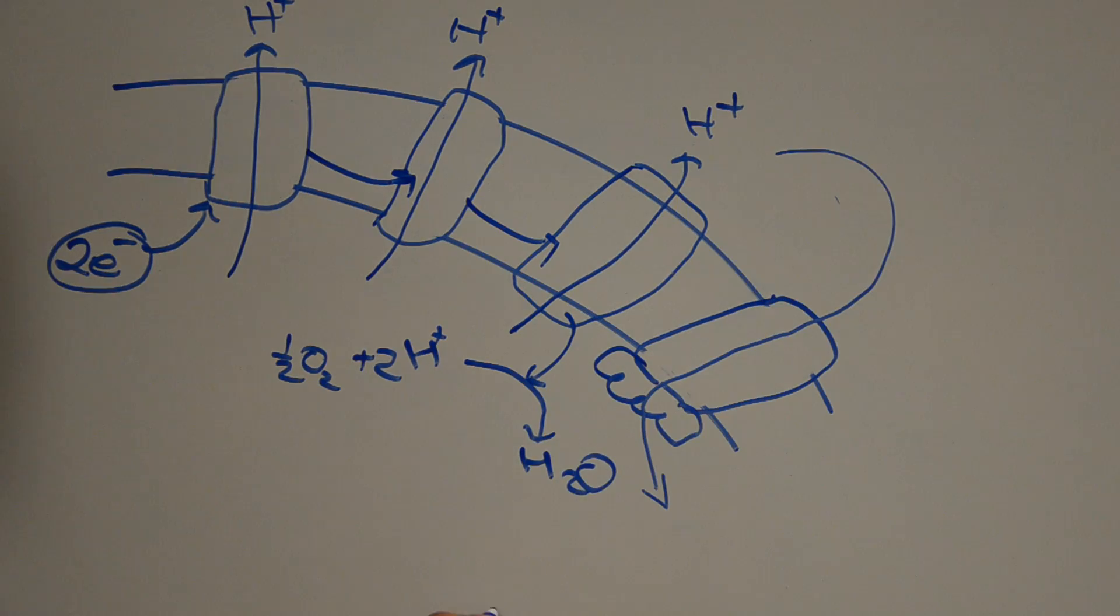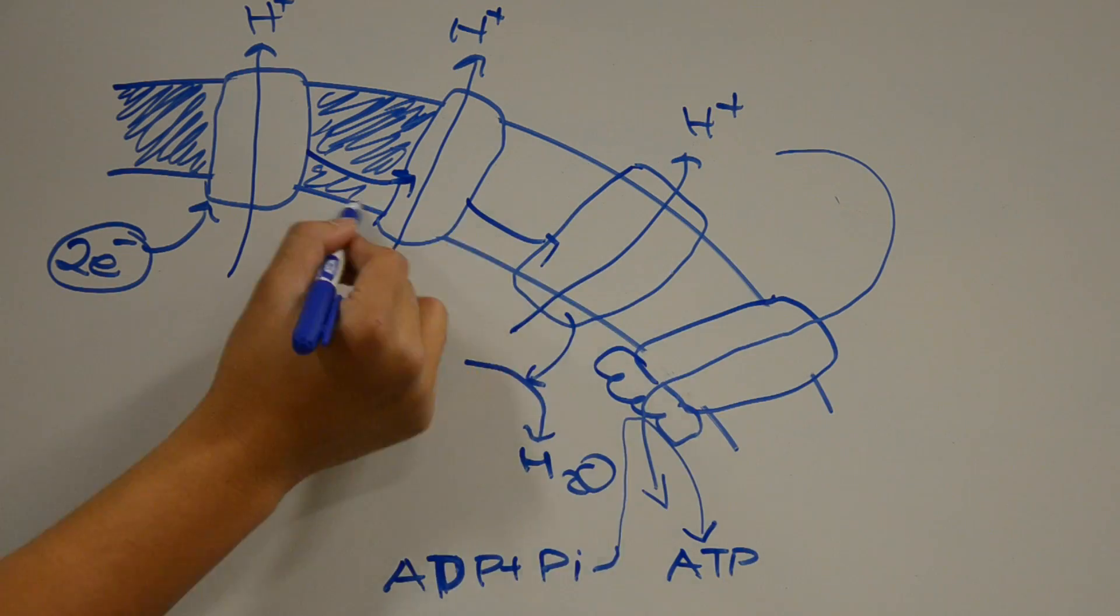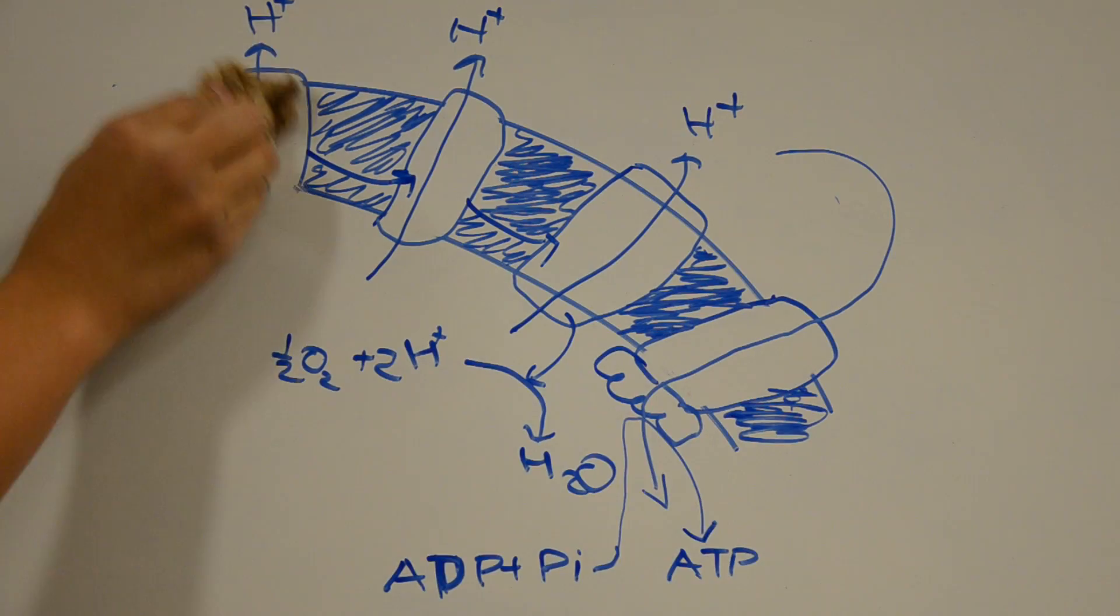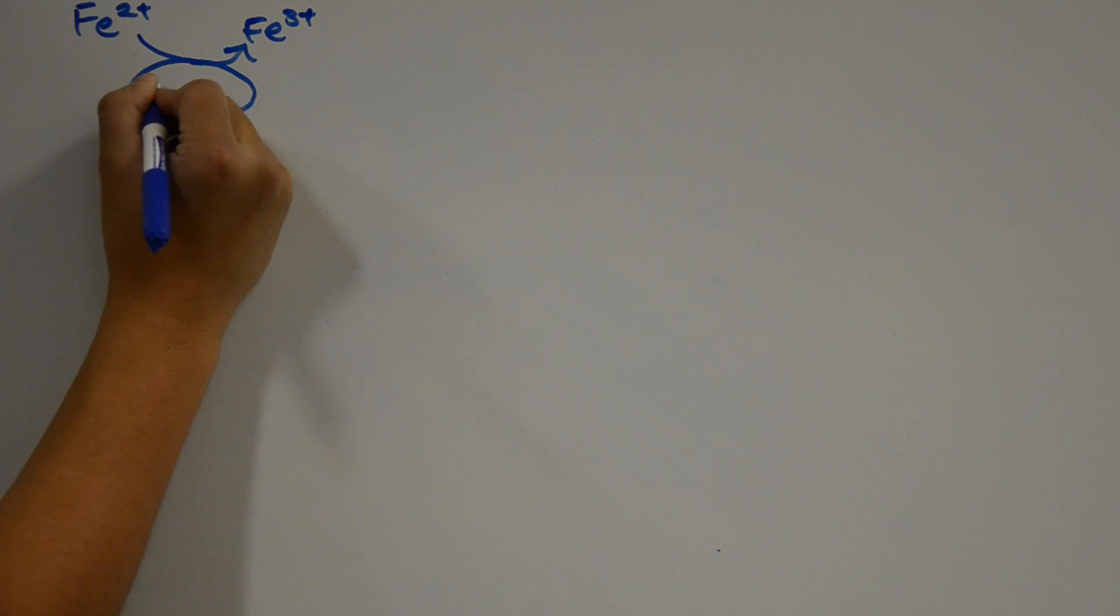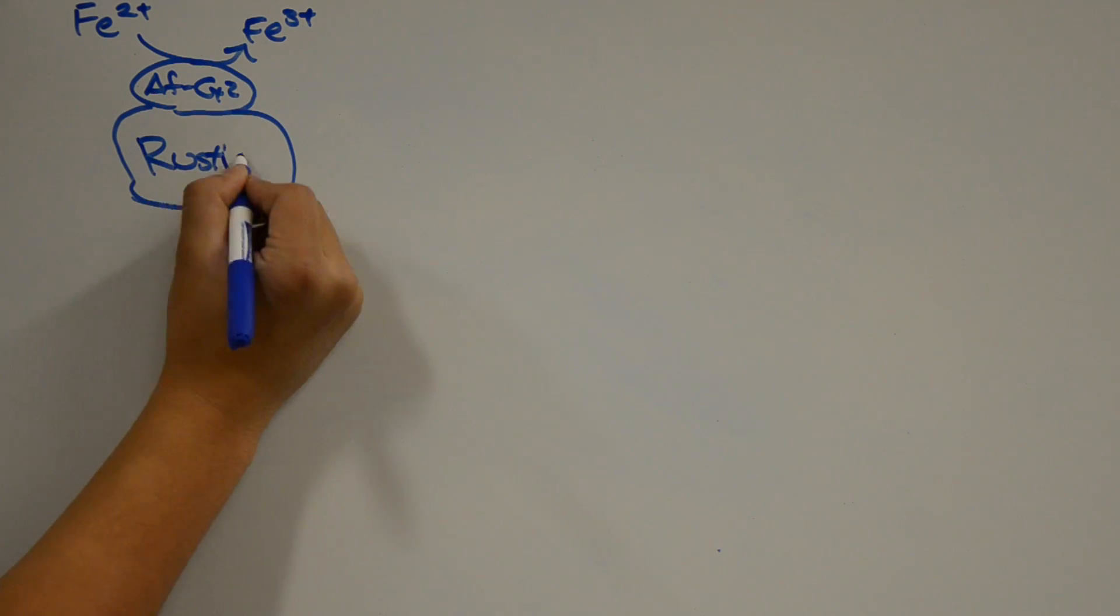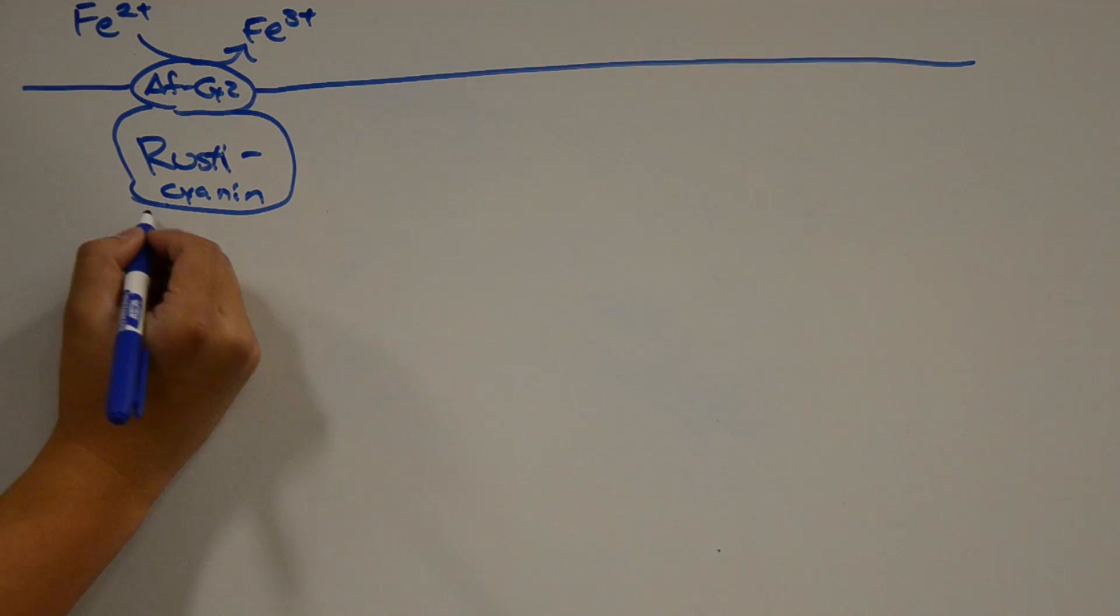Protons are subsequently allowed to flow back through the inner mitochondrial membrane through ATPase, producing ATP. Electron transport in A. ferrooxidans is similar, except of course we start with iron 2 plus as the electron donor.